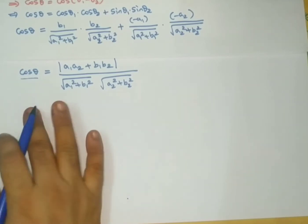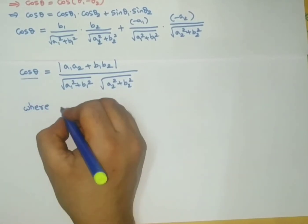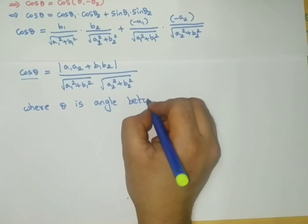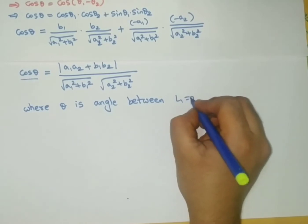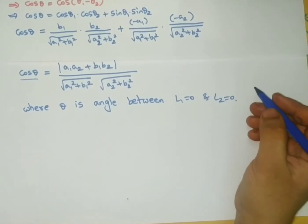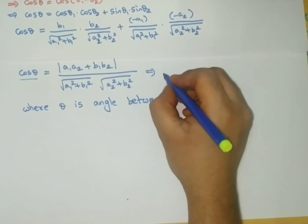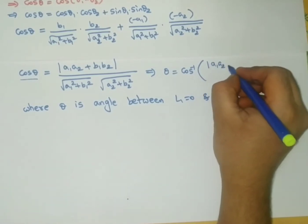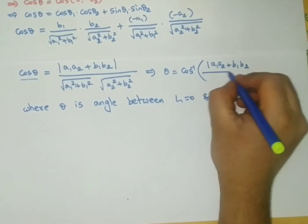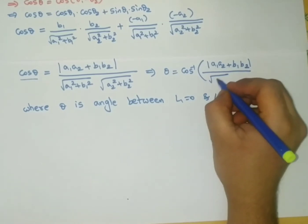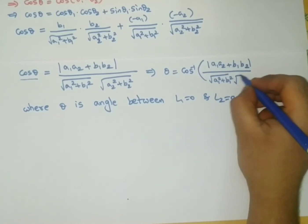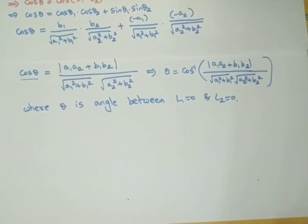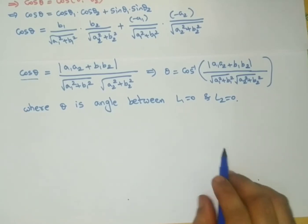Therefore, where theta is the angle between L1 = 0 and L2 = 0, we have: theta = cos⁻¹ of |a1·a2 + b1·b2| / (√(a1² + b1²) × √(a2² + b2²)). This is the formula for finding the angle between any two straight lines.